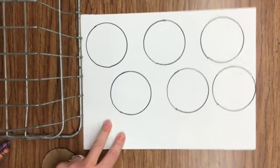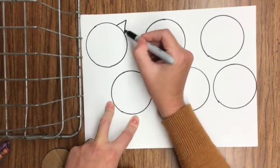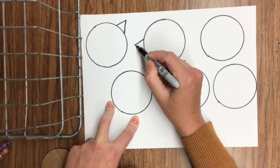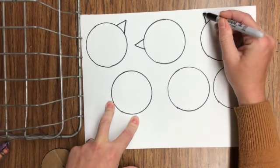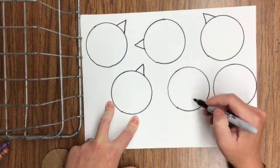After I get all my birds drawn, I'm going to go through and add beaks to them. So I'm just going to add a beak to different sides of my bird so they're all facing different directions. Kind of place them wherever you'd like to.